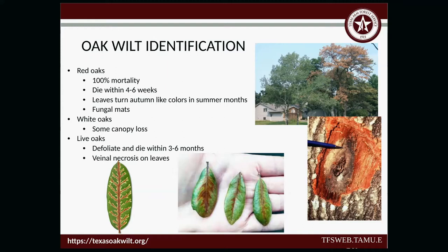Oak wilt shuts down the vascular system in the tree, so it cannot bring up nutrients and water — you're really having to force the fungicide in. In summer, arborists recommend watering around the root system at least a day before they come out, to trigger the tree to start taking something up. It takes around two to four hours to inject, depending on the tree. It can be costly — landowners have told me arborists have quoted them $6,000 to $9,000 to treat two trees. It's about $15 to $20 per inch of diameter of the tree. The labor is what gets you — the actual fungicide isn't that much.